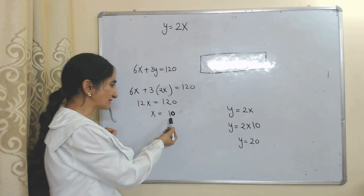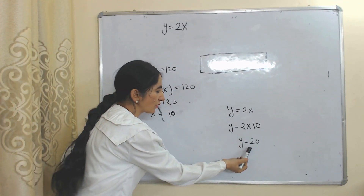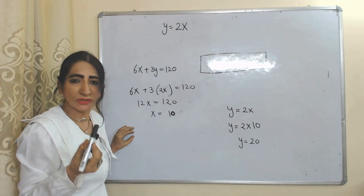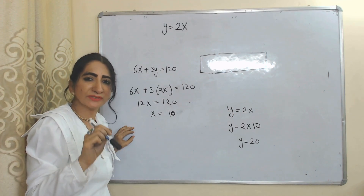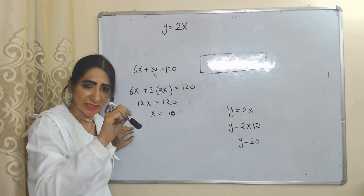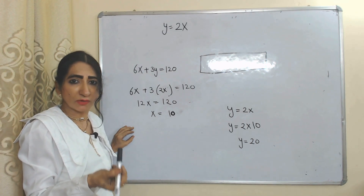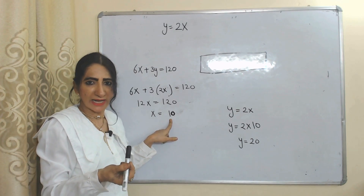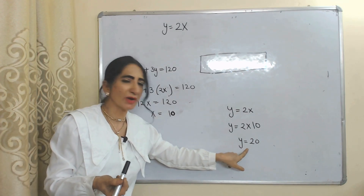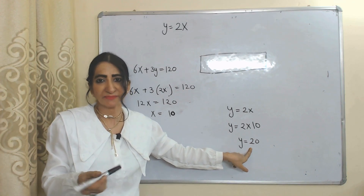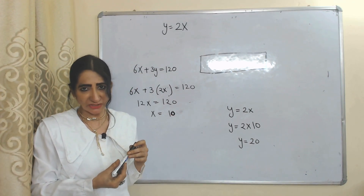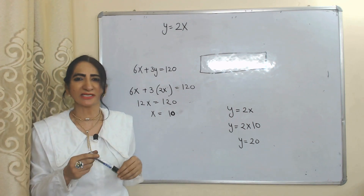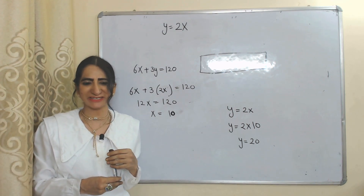The optimum quantity of x is 10 and the optimum quantity of y is 20. This means that in order to receive maximum satisfaction with the given income and prices of goods, the consumer should buy 10 units of x and 20 units of y. This is all about utility maximization by using the Lagrange function. Thank you so much for watching. Bye, take care.